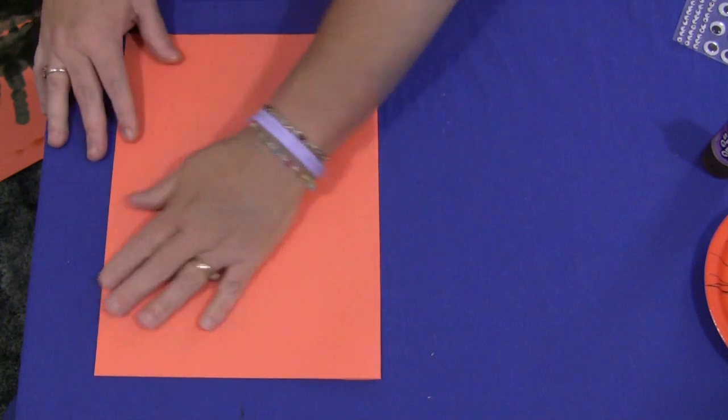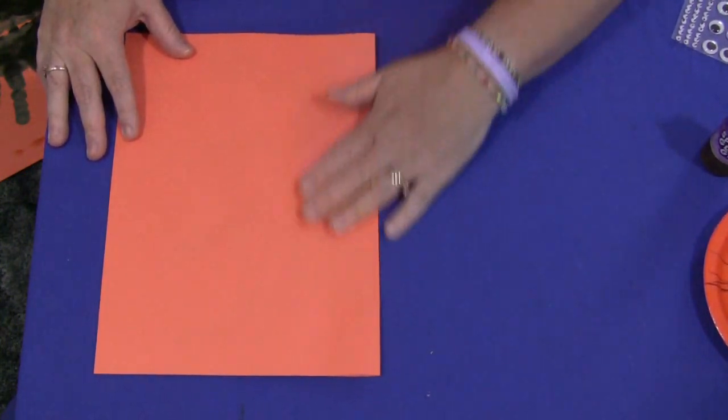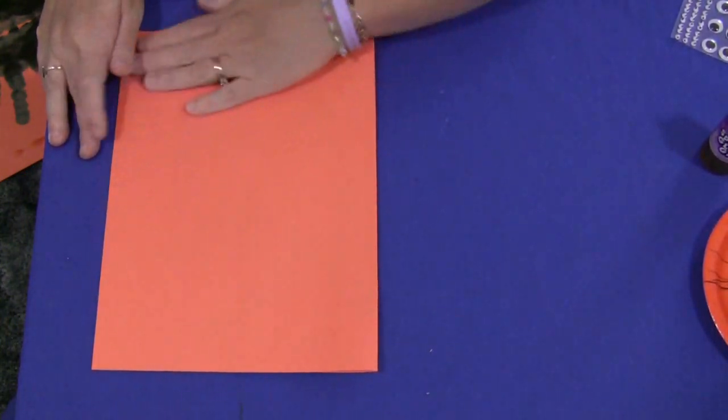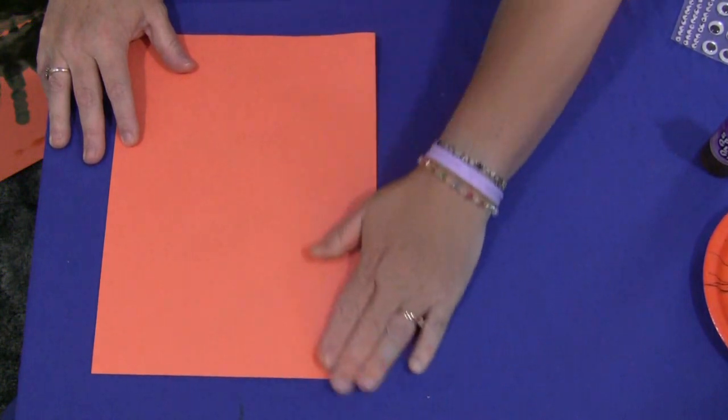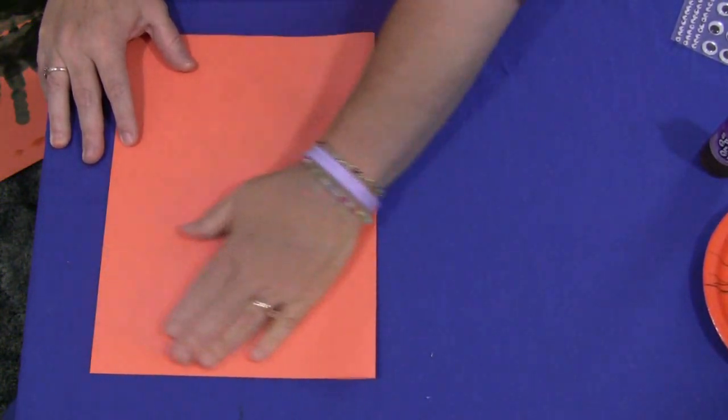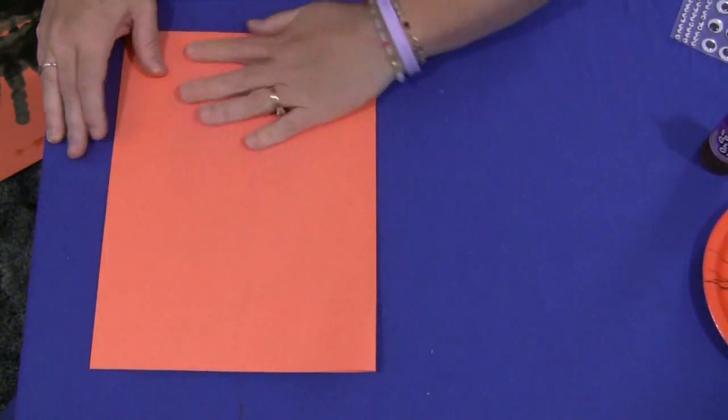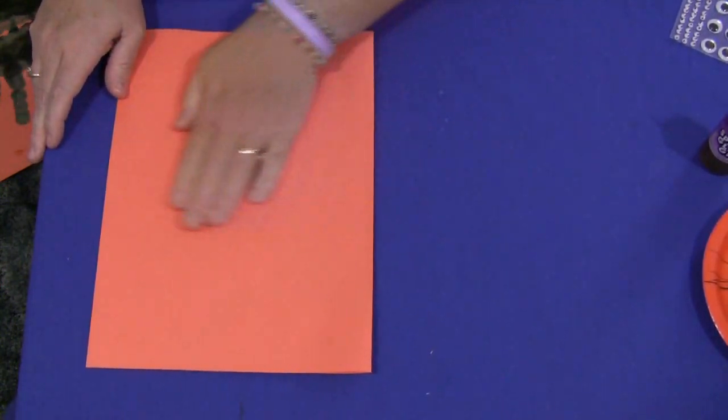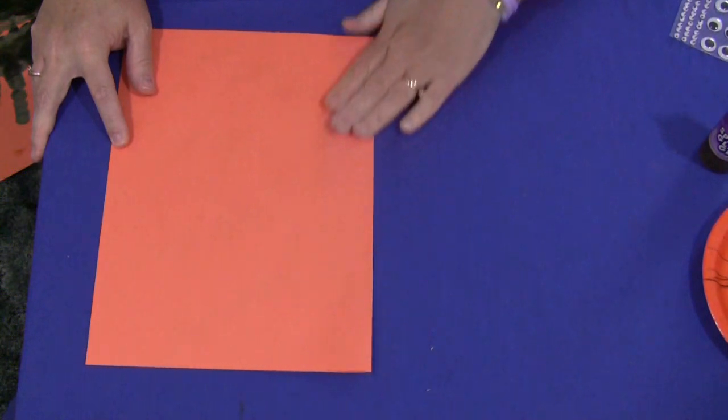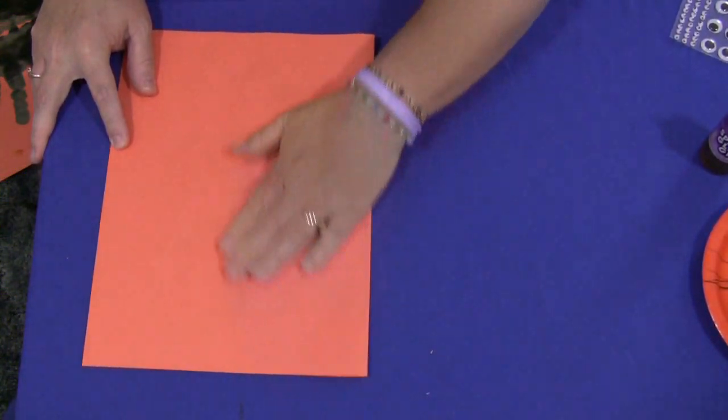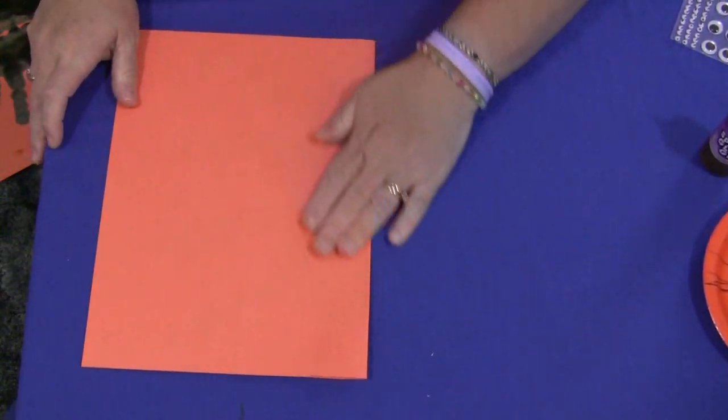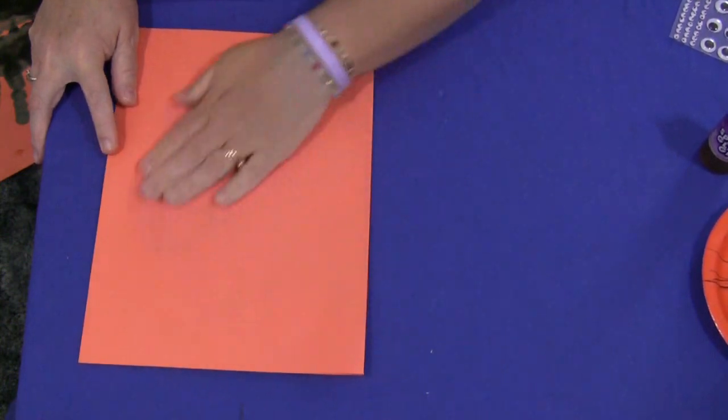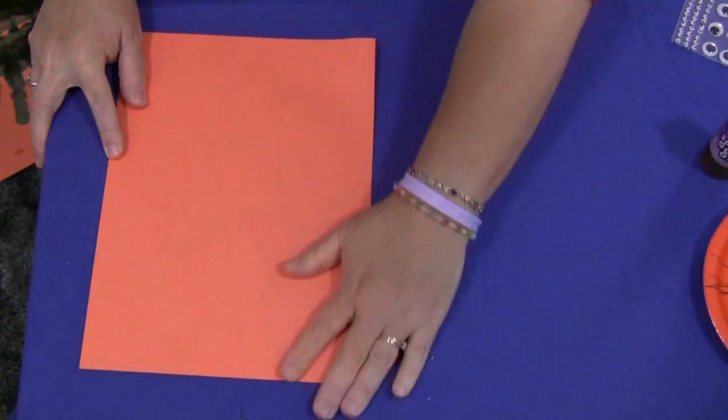Wait until after you fold it in half and then gently rub back and forth. Like your hand is an iron, just back and forth. Put a little bit of pressure on.